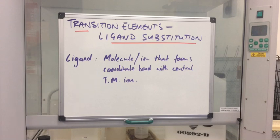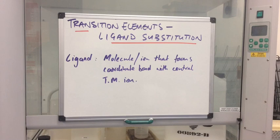Ligand substitution reactions are as simple as they sound. Basically we're going to take one ligand off the central transition metal ion and replace it with a different ligand. I'm going to show you the test tube reactions and we're going to focus on the colour changes and the equations for the reactions.